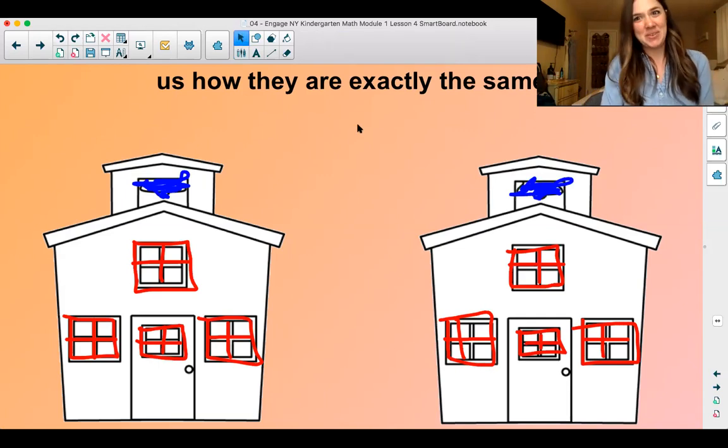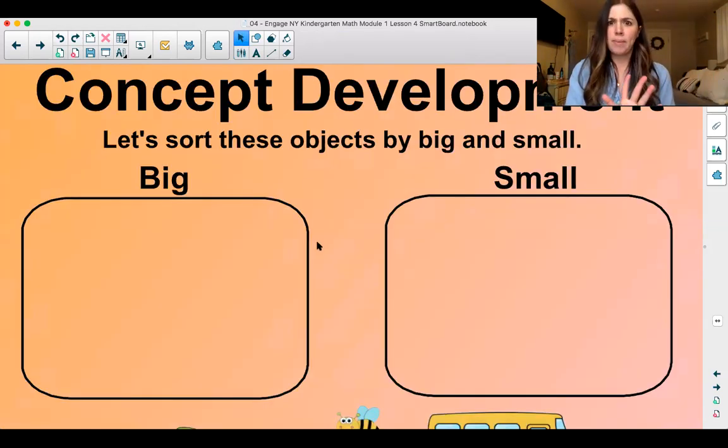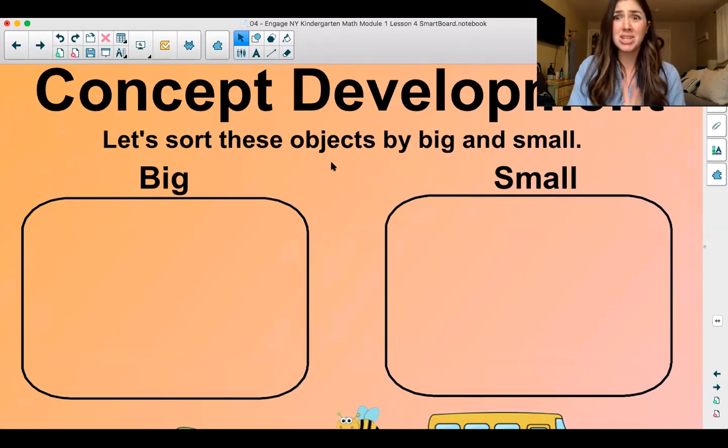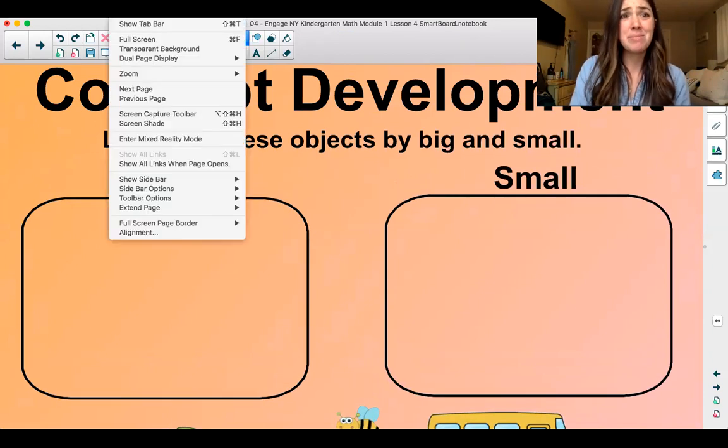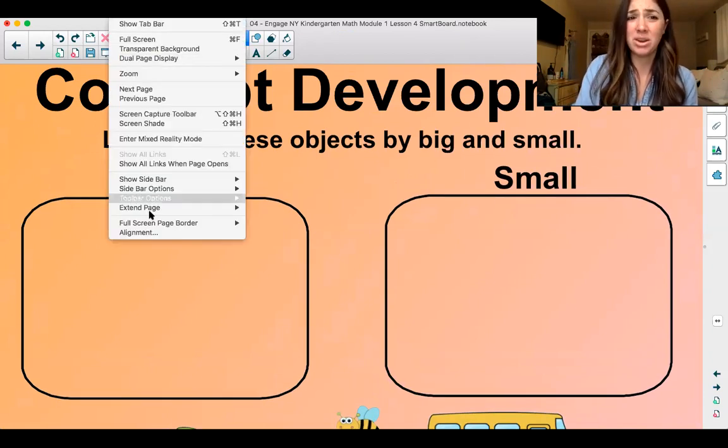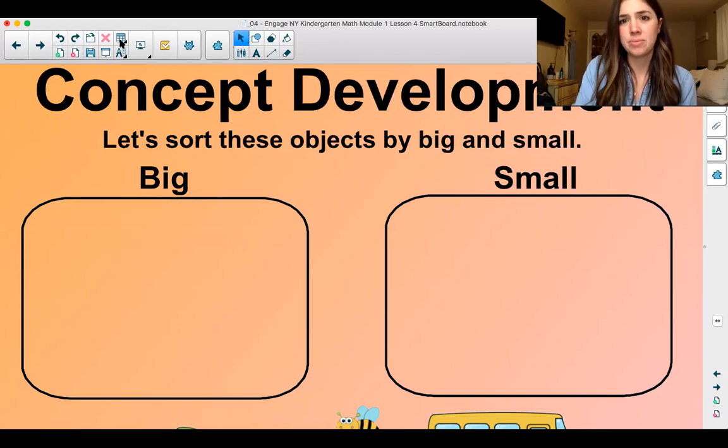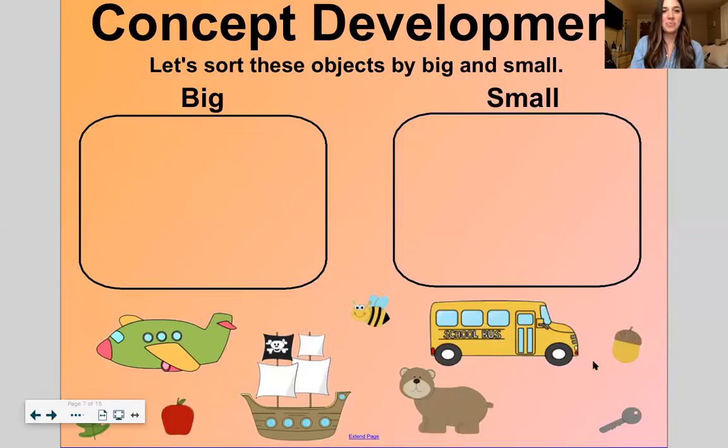These are exactly the same. Well, I didn't do the best work, but it's kind of tricky to do it on my computer here. But they are exactly the same colors, right? I'm sure you could do a better job than I did coloring. Let's move on to the next one. Here is our concept development. Remember, we're going to sort objects into predetermined categories.